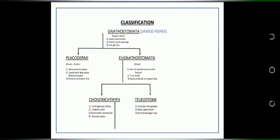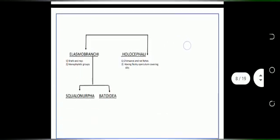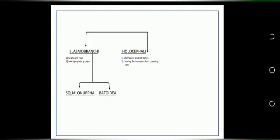Again, the Class Chondrichthyes is divided into two subclasses. The subclass Elasmobranchii is monophyletic group and the second subclass Holocephali have fleshy operculum that covers slits.